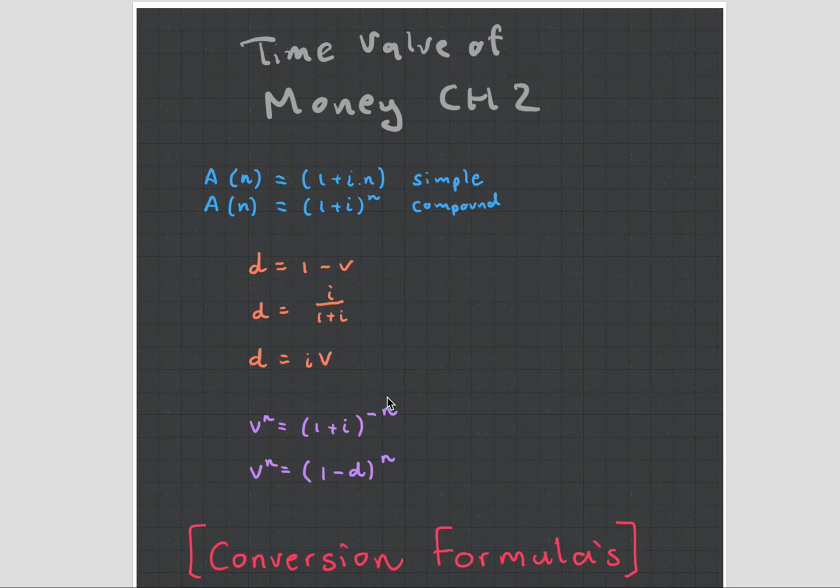This is where actuarial science gets a little tricky because we're introducing this thing here called v^n, which is the discounting factor. What v^n does is it discounts, so let's say we have $11 tomorrow, we go v^1 if n is in days, and that would give us the value of money for today.